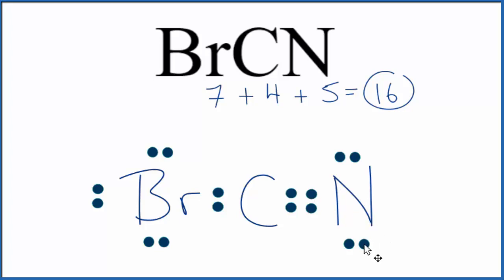Let's move another pair in from the nitrogen. So now the carbon has two, four, six, eight. The nitrogen has eight, and the bromine has eight. We're using all 16 valence electrons.